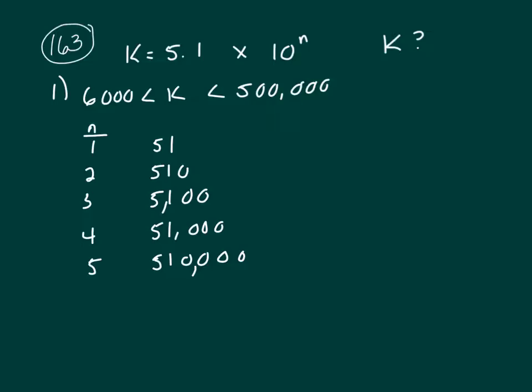So k is in between, there's only one number in between 6,000 and 500,000, and it's this one. So that means n would be 4. So yes, statement 1 works.